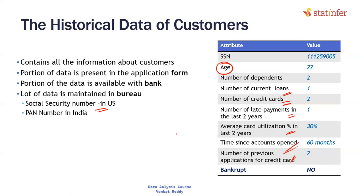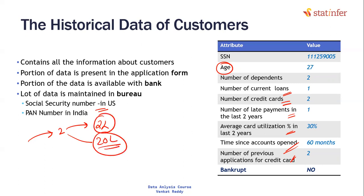There are many factors that influence the credit score - how much amount the customer has to pay back to the bank right now. A customer with two lakh rupees in loans versus a customer with 20 lakh rupees in loans - the customer with 20 lakhs is obviously much riskier. Also, the length of credit history matters: a customer using a bank account from the past 12 years is much safer compared to a new customer.